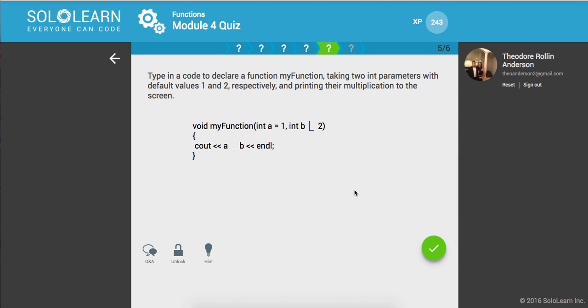Awesome. Type in a code to declare a function myfunction taking two int parameters, okay, and we're going to print the multiplication. So with this...